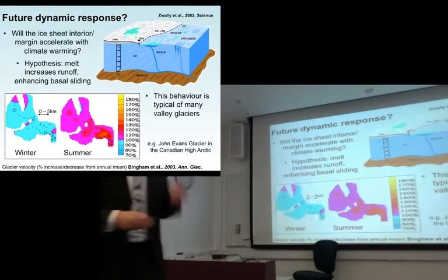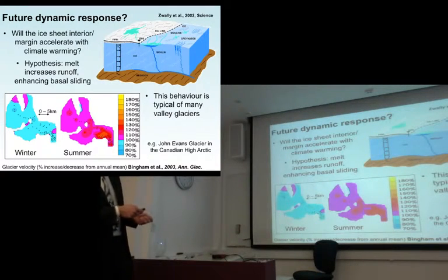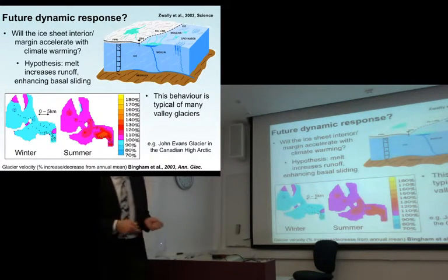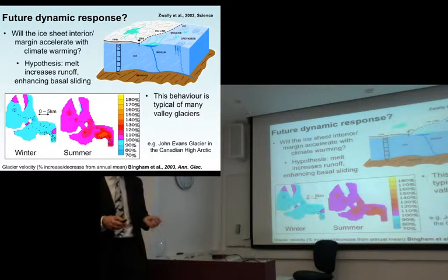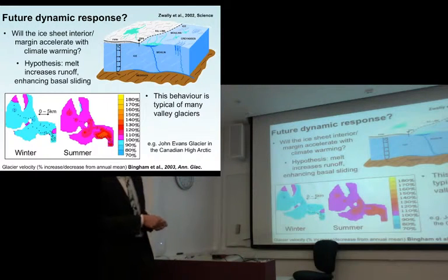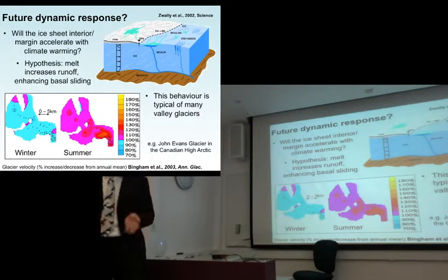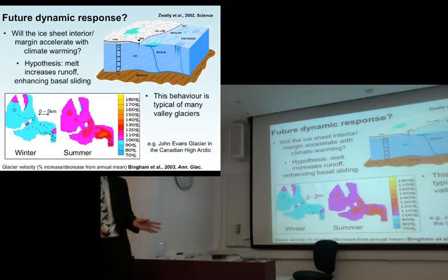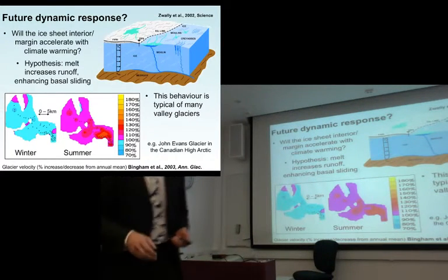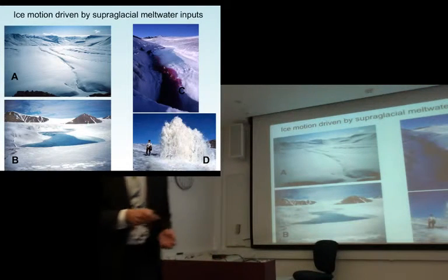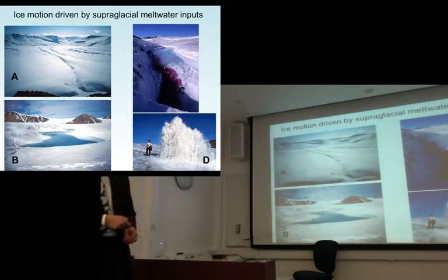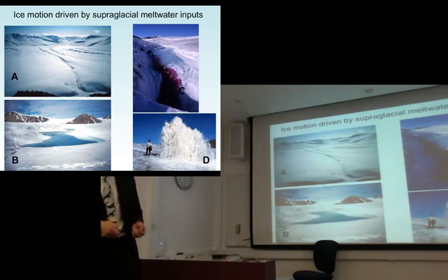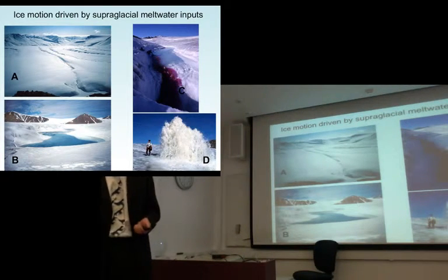We need to link detailed laboratory process scales up to the ice sheet scale to understand how a glacier might respond. The big question for Greenland is: will the ice sheet interior accelerate with climate warming? This plot shows ice velocities at a polythermal glacier in the Canadian high Arctic, where the percentage scale is relative to annual velocity — blue is slower than annual, red is faster. The simple take-home message is that ice flows slower in winter than in summer, because in winter water isn't getting to the bed, but in spring, meltwater penetrates to the bed, causing high pressure and more rapid flow.